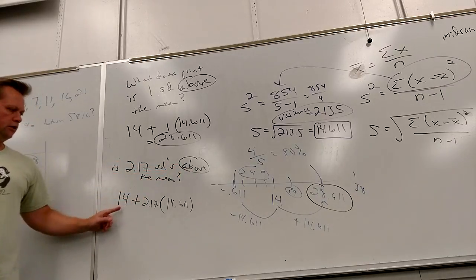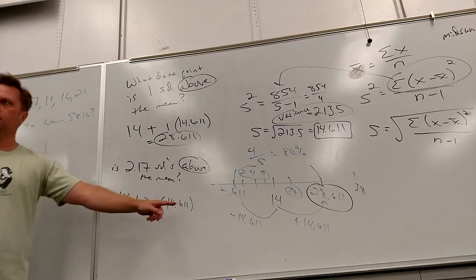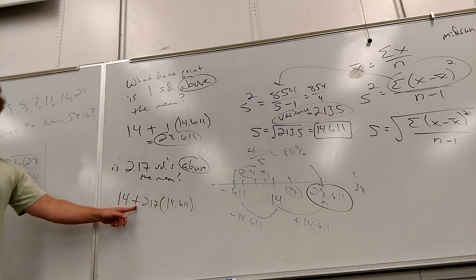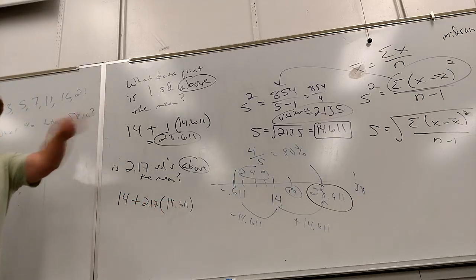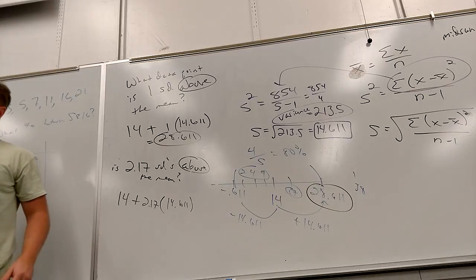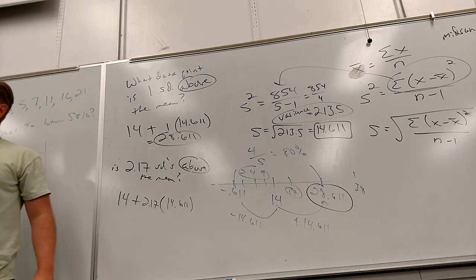So it's just mean plus that many of these — that's how you get that many steps above the mean. And if I said below, the only thing that changes is you'd be subtracting because you want to go below the mean.